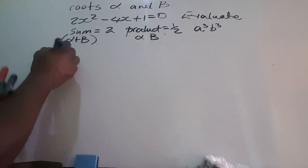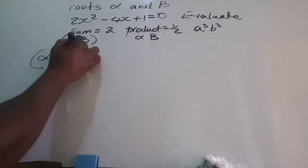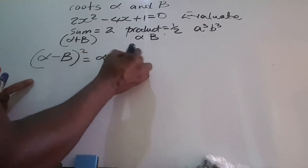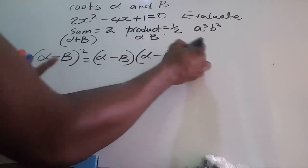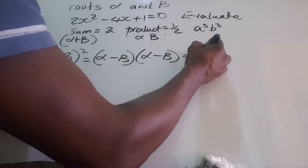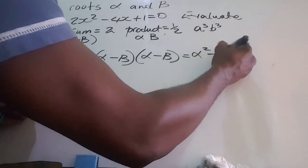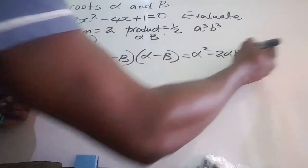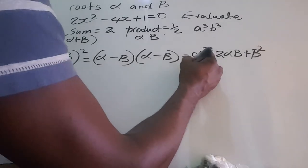Looking at this case, alpha minus beta squared can be represented as alpha minus beta times alpha minus beta. What do we have for this? It's going to give us alpha squared minus 2 alpha beta plus beta squared.